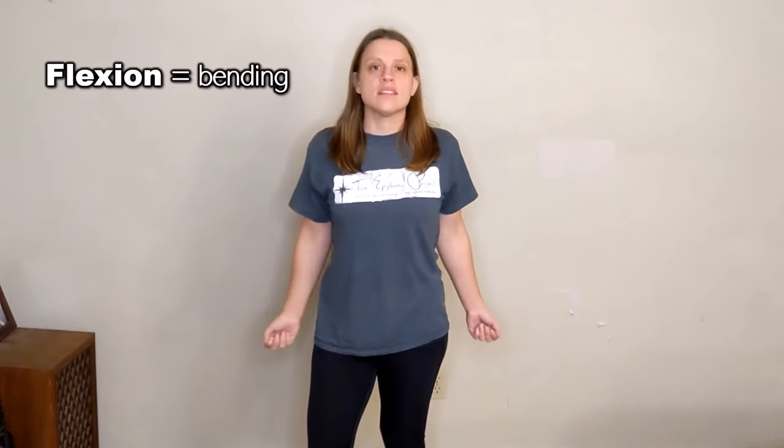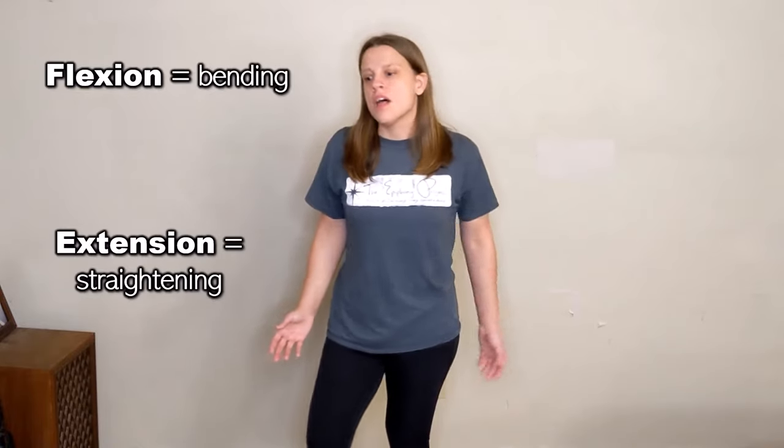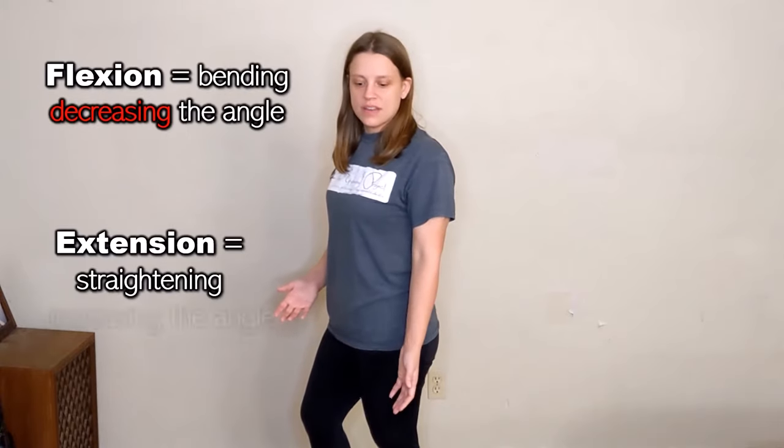Probably the easiest way to think about flexion and extension is that flexion is bending, extension is straightening. You might also hear it said that when you're flexing you're making the angle of the joint smaller, when you're extending you're making it bigger.